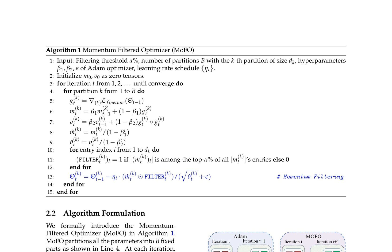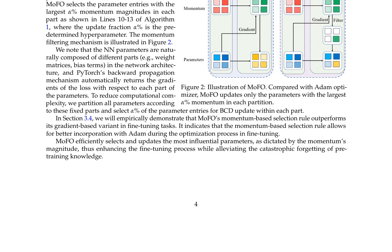The authors discuss keeping the model closer to the pre-trained model using the classical block coordinate descent (BCD) method. They propose updating only the parameters with the greatest influence on reducing fine-tuning loss, measured by the magnitude of the gradient. In the Adam optimizer, momentum directly affects parameter updates while gradients influence them indirectly. Motivated by this, MoFo modifies Adam by updating the subset of parameters with the largest momentum magnitude.